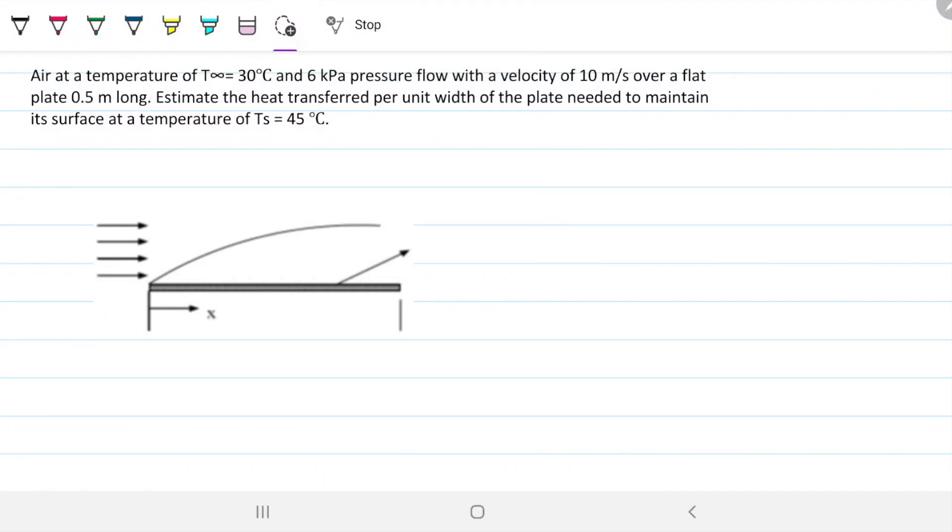Air at a temperature of 30°C and 6 kilopascal pressure flows with a velocity of 10 meters per second over a flat plate 0.5 meters long. Estimate the heat transferred per unit width of the plate needed to maintain its surface at a temperature of 45°C.